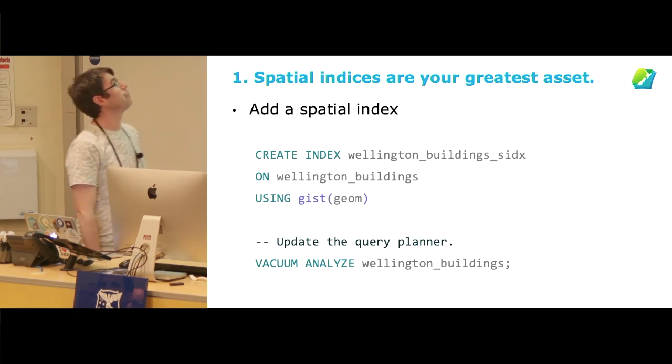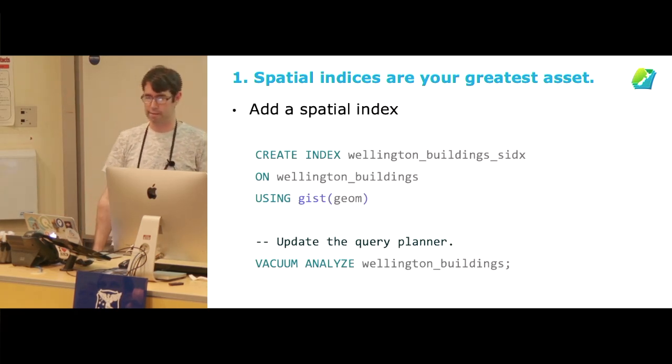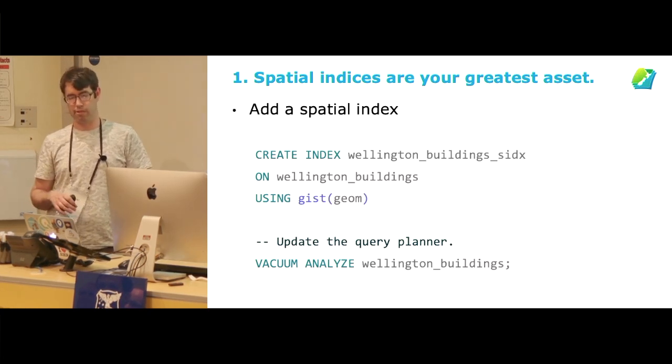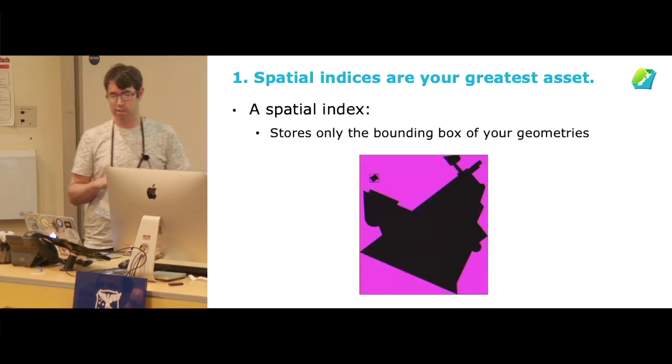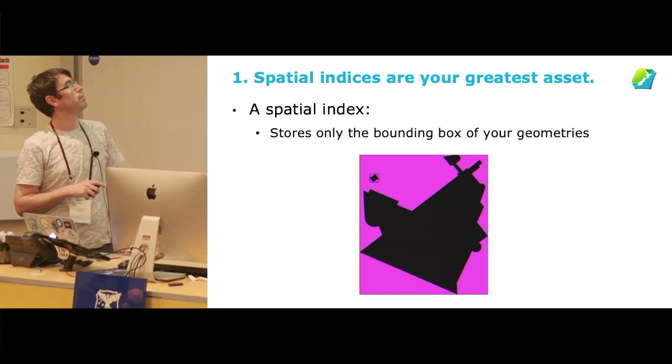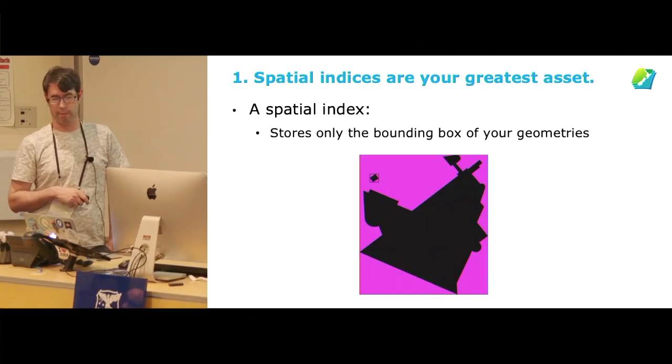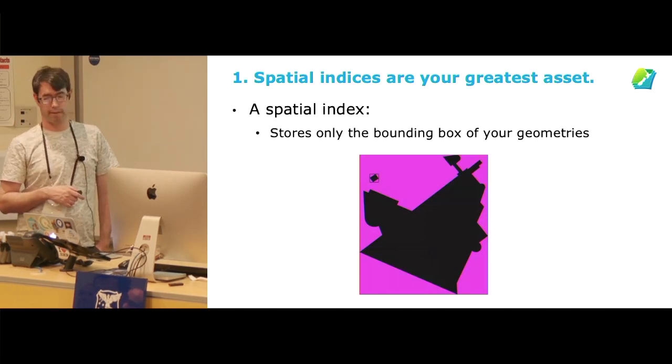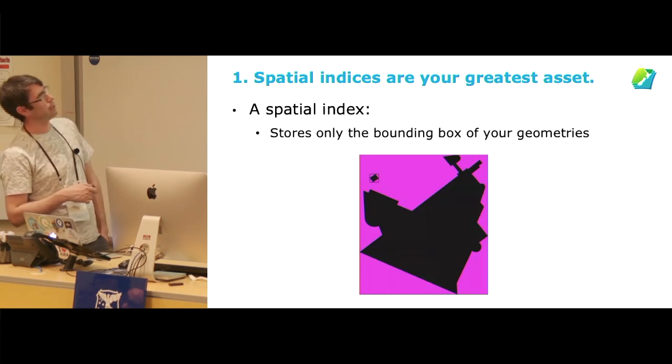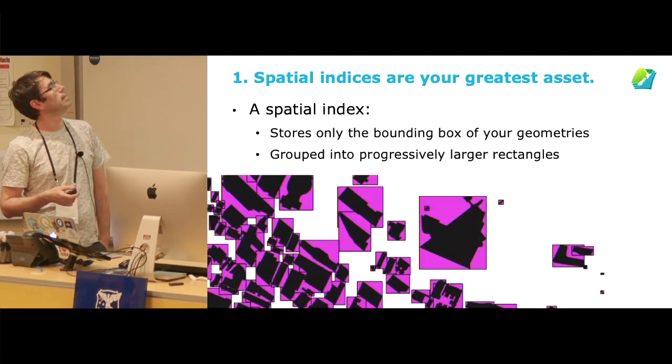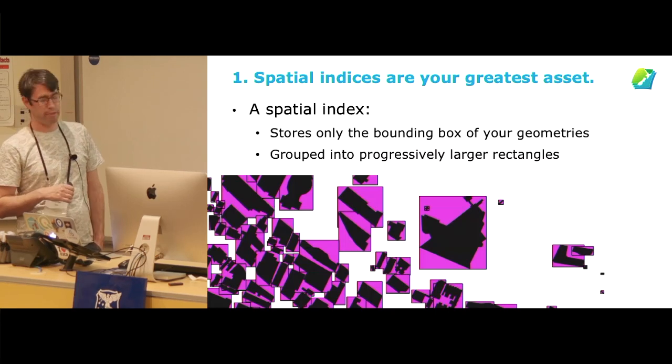The first thing that I've learned about PostGIS is that spatial indices are your greatest asset. Adding a spatial index is relatively straightforward, and then updating the query planner so that it makes best use of that spatial index. A spatial index is effectively a very simple representation of your geometry being stored in your database in order to do rapid analysis. This is Te Papa Tongarewa in Wellington, New Zealand. It's quite a complex shaped building, with another little building next to it.